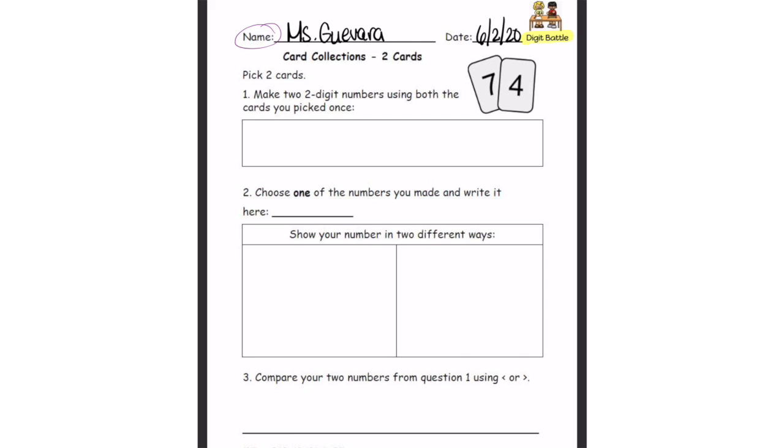The instructions tell you to pick two cards. However, we've already picked two cards for you, seven and four. You're going to use them to make two different two-digit numbers using both of the cards we have, seven and four.